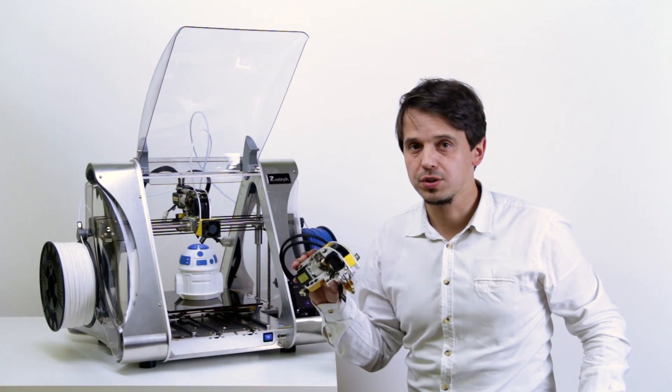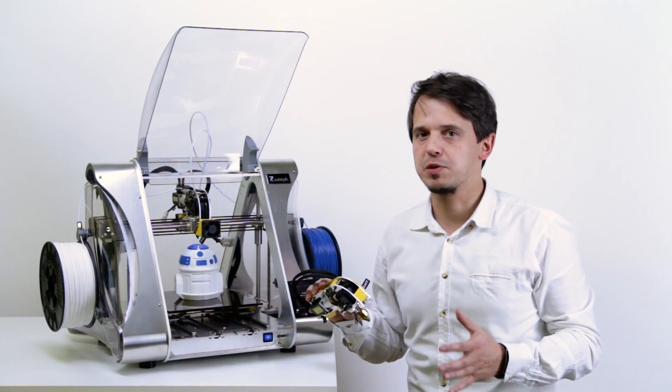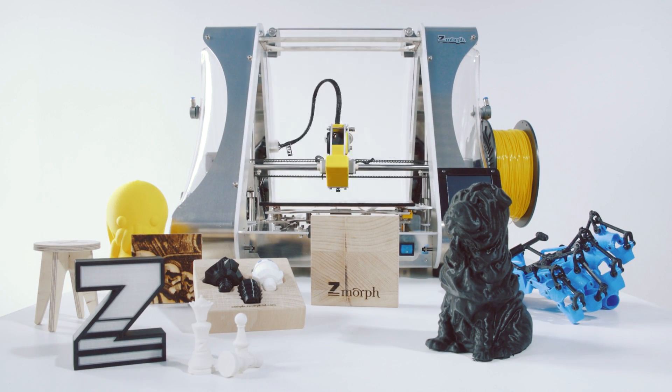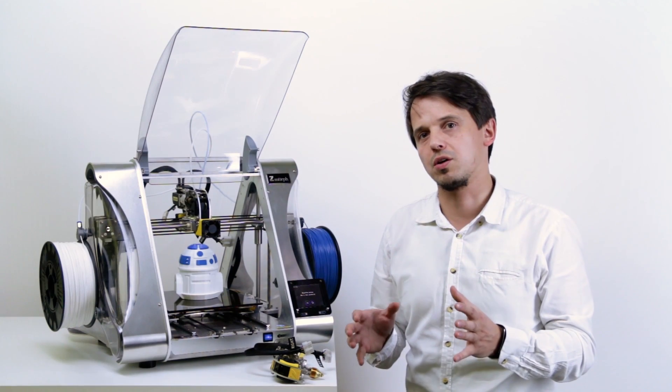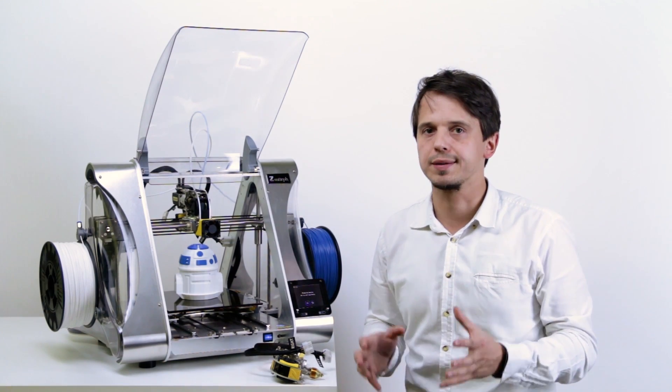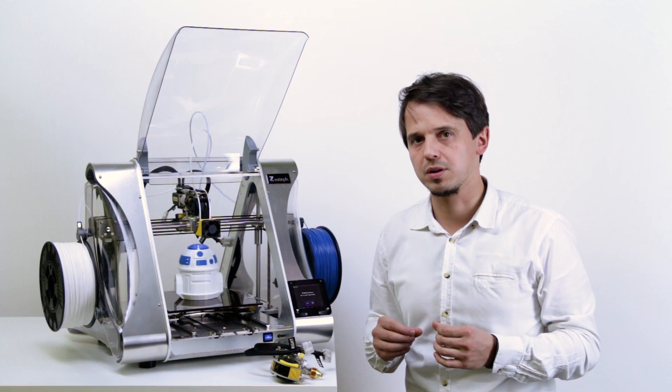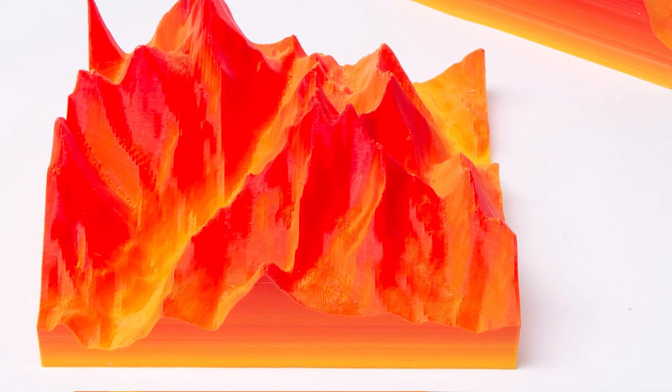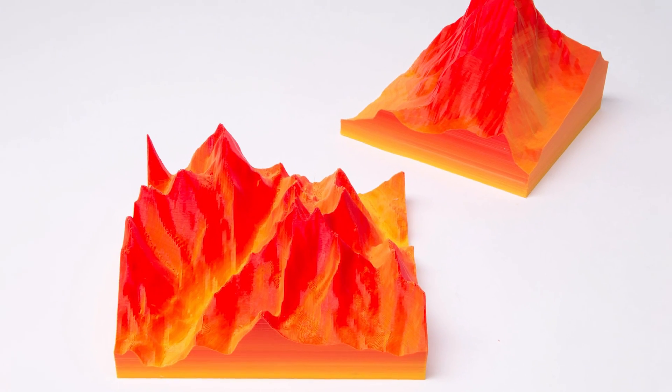So dual pro extruder is pretty advanced piece of equipment that can now be used with Z-Morph multi-tool 3D printer and offers functionalities that are not otherwise available anywhere on the market. This makes it a pretty unique proposal for all the users that want to get something more from 3D printer.